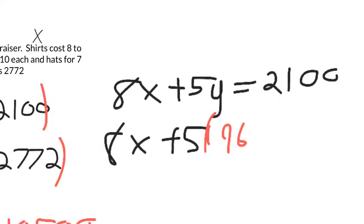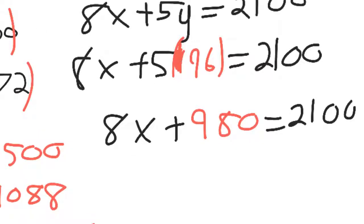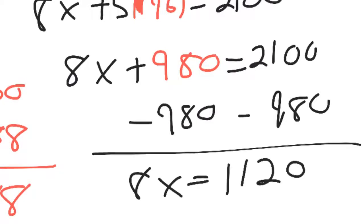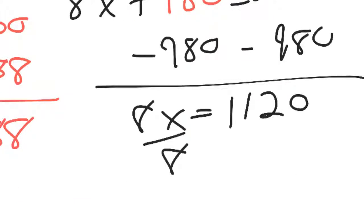I'm going to put it in parentheses to remind myself we're multiplying. Then we can keep simplifying. You can subtract 980 from both sides. You just need to divide both sides by 8. And we get the number of shirts.